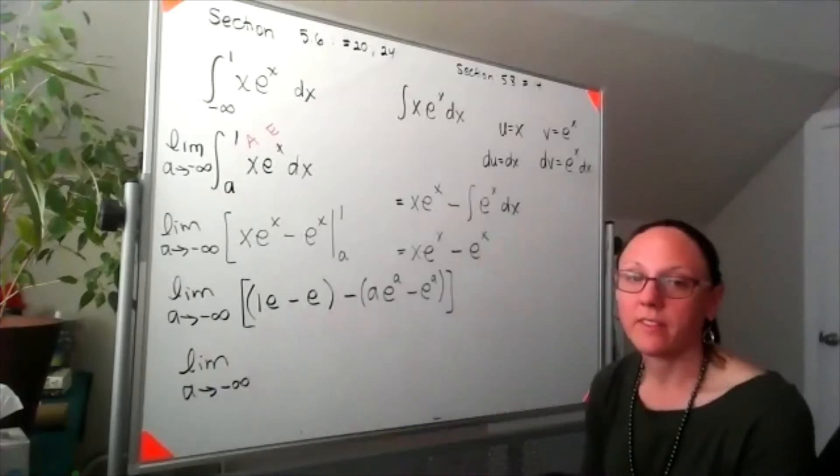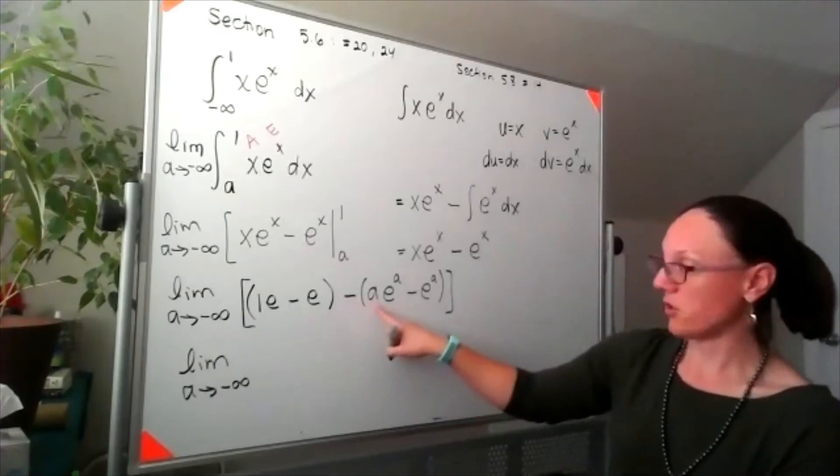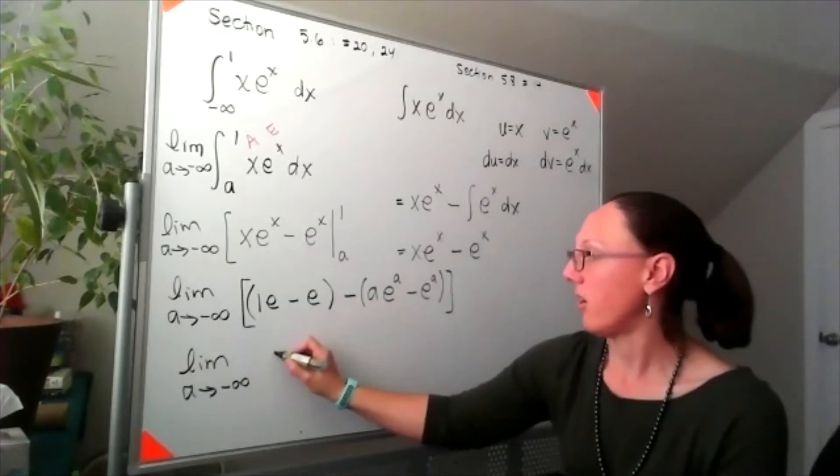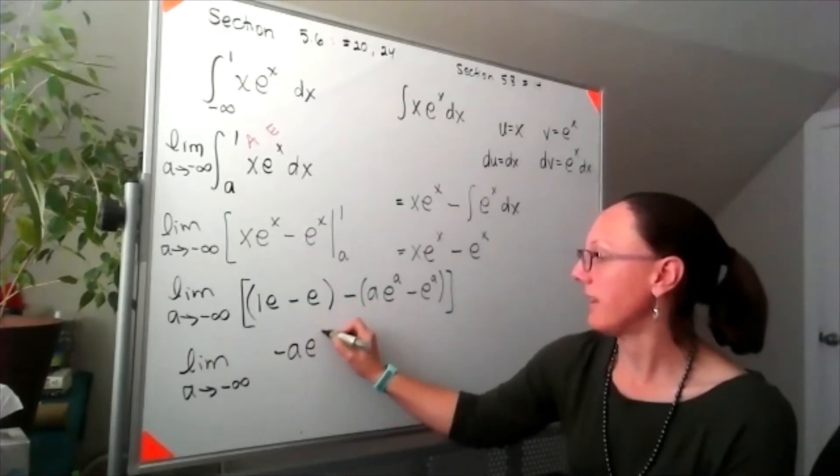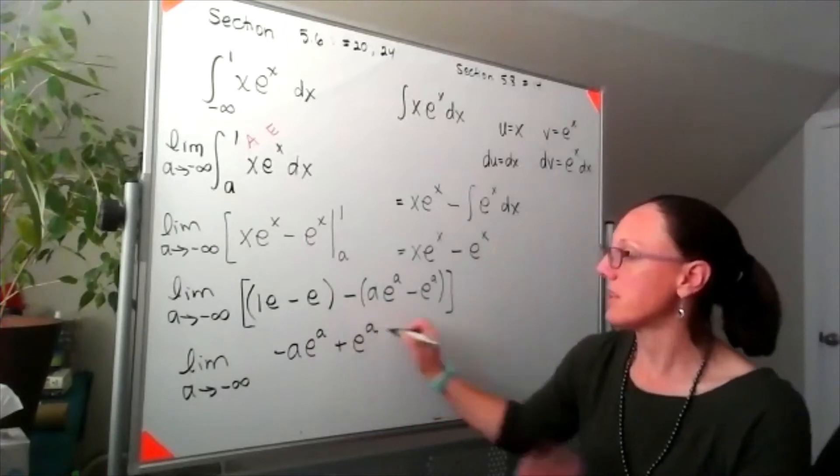Now we're taking the limit as a approaches negative infinity, and if I distribute this minus sign in, I'll have negative a e to the a plus e to the a.